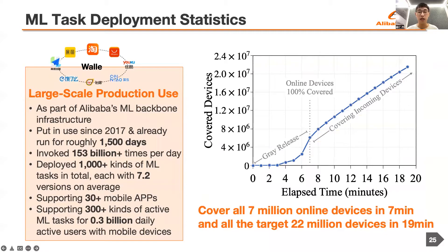Third is about the statistics of Wally's machine learning task deployment. Wally has been put in production since the end of 2017, running for roughly 1,500 days, and being invoked more than 153 billion times per day. Wally has deployed more than 1,000 kinds of machine learning tasks in total, and is now maintaining more than 300 kinds of active tasks on more than 30 mobile apps, with more than 0.3 billion daily active users. The right figure shows the release and deployment process of a randomly selected machine learning task: all 7 million online devices are covered in 7 minutes, and all 22 million target devices are covered in 90 minutes.